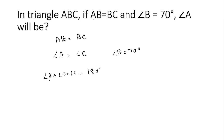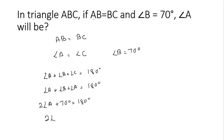So angle A plus angle B plus angle C equals 180 degrees. Because A equals C, I can replace C with A: 2 times angle A plus angle B equals 180 degrees. Angle B is 70 degrees, so 2 times angle A plus 70 degrees equals 180 degrees, which means 2 times angle A equals 110 degrees, and therefore angle A equals 50 degrees.